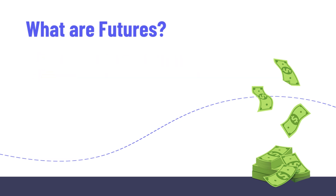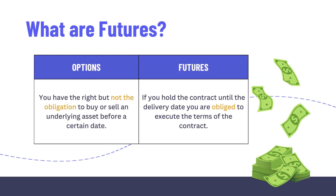The main difference between futures and options is that with an option you have the right but not the obligation to buy or sell an underlying asset before a certain date. With a futures contract, if you hold it until the delivery date, you are obliged to execute the terms of the contract.